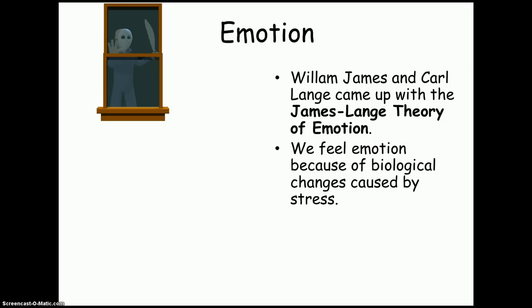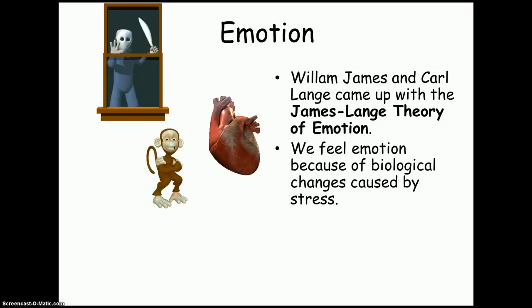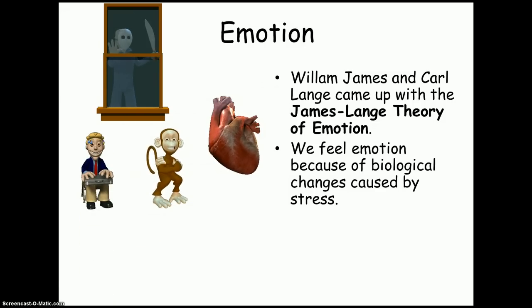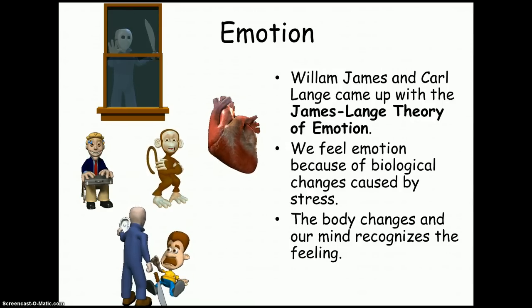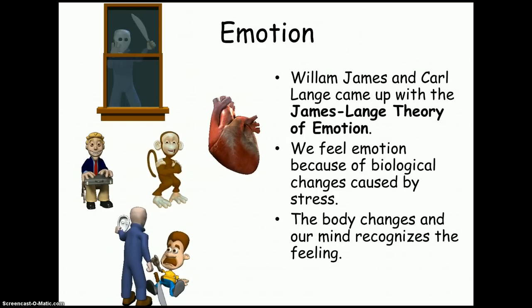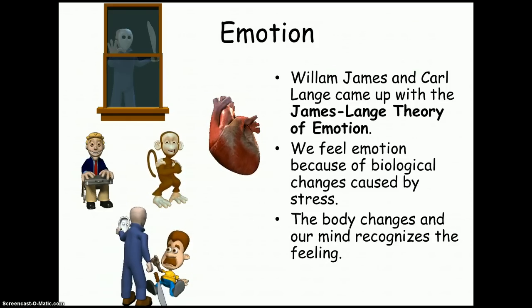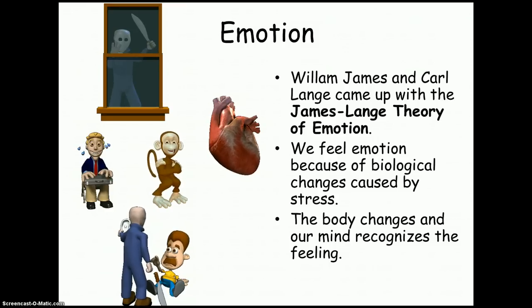The James-Lange theory is that we feel emotion because of biological changes caused by stress. You feel something scares you, your heart begins to race, and that bodily change causes you to feel the fear — maybe your knees are shaking. The key distinction is that your feeling of fear or emotion followed your body's response. First comes the distinct physiological response, then as we observe that response comes our experienced emotion. In many ways this seems backwards or counterintuitive — it's against what many of us would think about how we experience emotion.